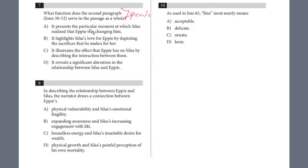So what function does this paragraph represent? 'It presents the particular moment at which Silas realized that Eppie was changing him.' This is a little too extreme. There's not evidence of a very specific moment where he had some type of epiphany. 'It highlights Silas' love for Eppie by depicting the sacrifices that he makes.' Sacrifices really isn't given in that paragraph. 'It illustrates the effect that Eppie has on Silas by describing the interaction between them.' And this is a broad, general choice. Definitely the best one. Lots of detail on how they interact and how he now is starting to see the world again.